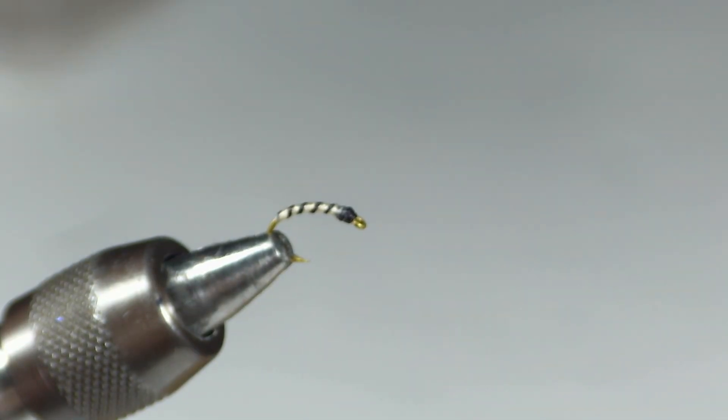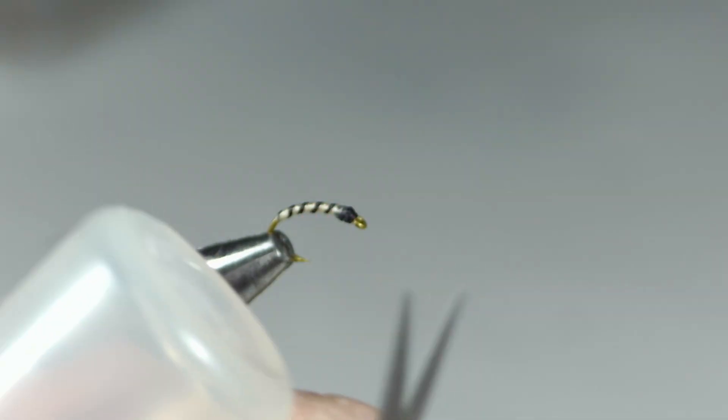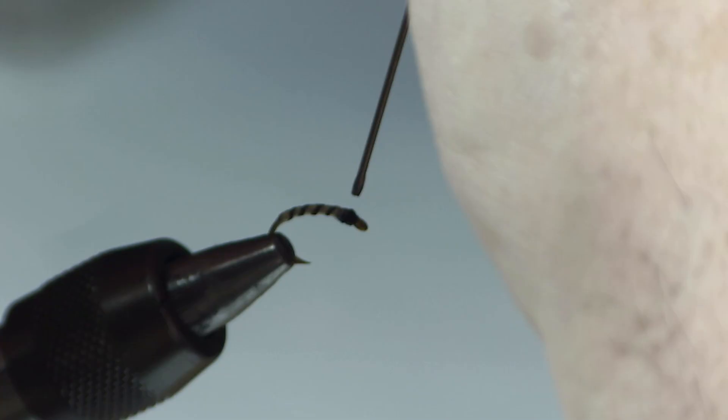Now if you want to put some head cement on, there are things labeled as head cement. There's Sally Hansen's Hard as Nails that you can get in the nail polish department. We sell a good bit of some stuff called Hard as Hull. There's UV resin that you can use, which we'll be using in some other flies. But what I use on a lot of flies is this little bottle of stuff - this is just plain old clear lacquer, like you can buy a quart of at the hardware store. We'll just put a drop on there.